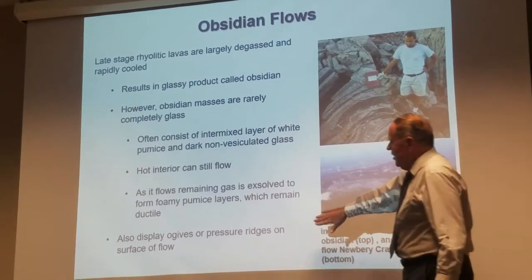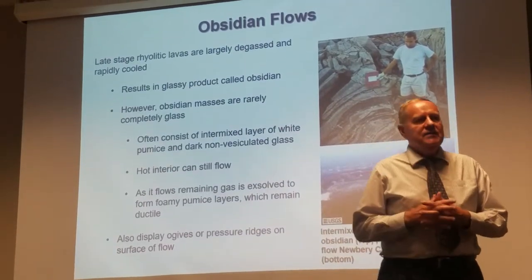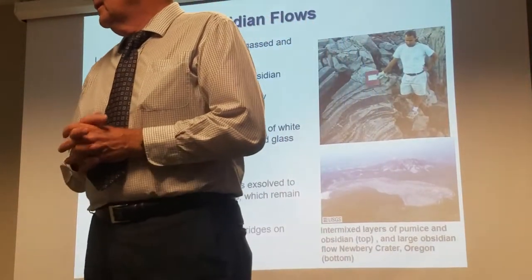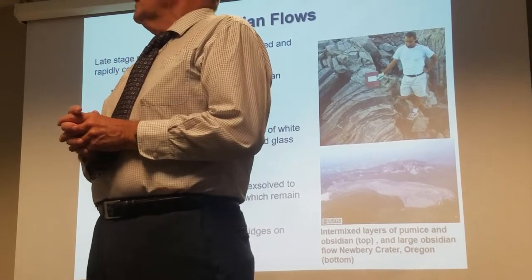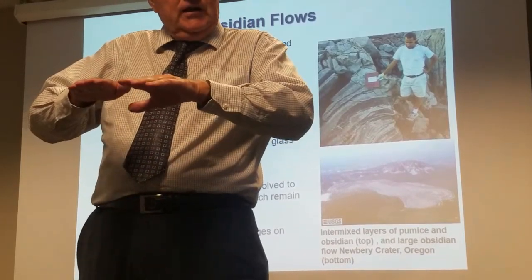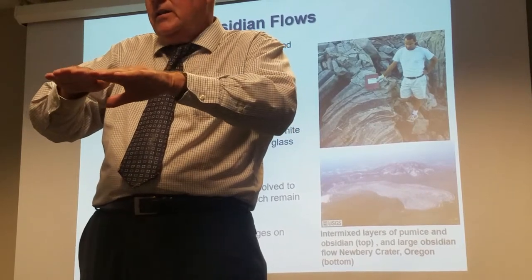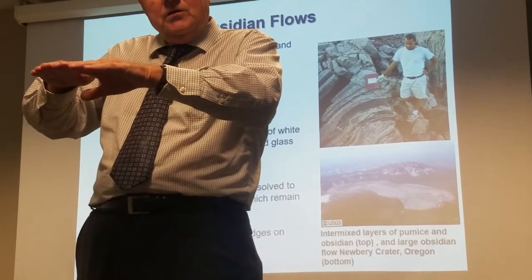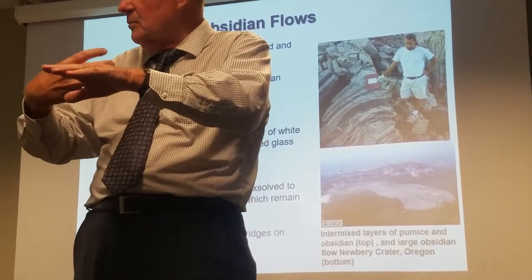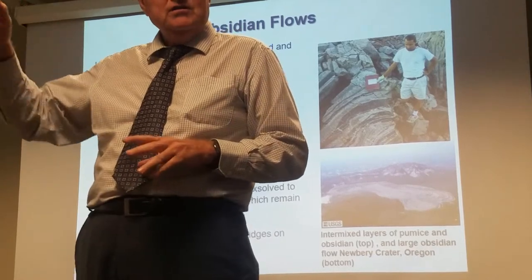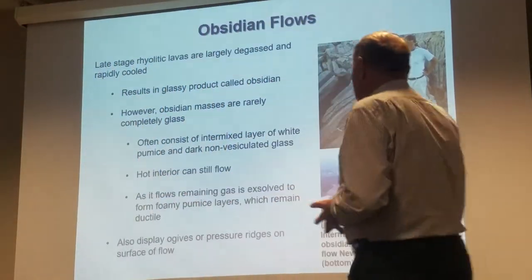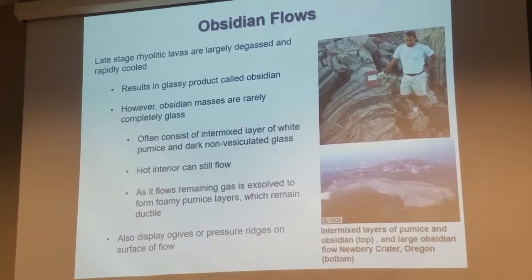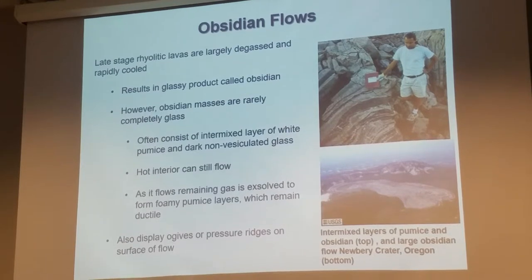You also get pressure ridges forming on these things. Remember, we talked about pressure ridges in pahoehoe last time — cooling on top causes them. As the flow moves out it's cooling, and the flow front starts to slow down while the warmer material behind it piles up, creating a series of ridges called pressure ridges. The same thing can happen here, and I'll show you another example when we get to coulees.